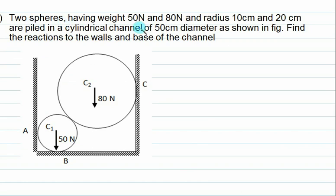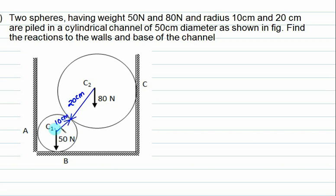Problem 2: Two cylinders having weights 50 N and 80 N, with radii 10 cm and 20 cm respectively, are piled in a cylindrical channel of 50 cm diameter. The channel diameter equals 50 cm. Find the reactions at the wall and at the base of the channel.